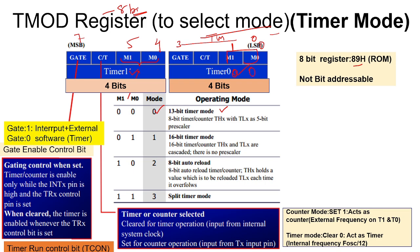Suppose M1 M0 is specified as 0-1, it will operate in 16-bit timer mode. In 16-bit timer mode, it can count up to a maximum pulse of 2 power 16, that is approximately 65,000. If M1 M0 is 1-0, it will act as an 8-bit auto reload timer.